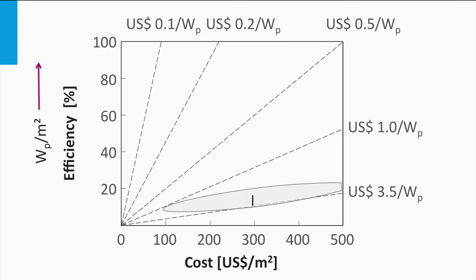The first generation PV technology is based on using very pure, bulky semiconductor materials like crystalline silicon. Pure materials mean fewer defects and, in general, solar cells with a relatively high efficiency can be manufactured. However, high quality materials require more expensive production processes, which makes the cost price per area of the solar cell larger as well. The light gray circle roughly shows the area in which you would find first generation PV technology.